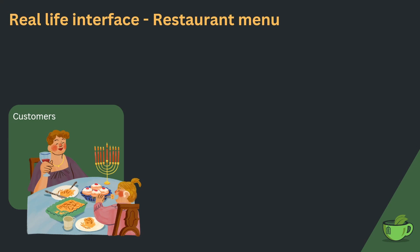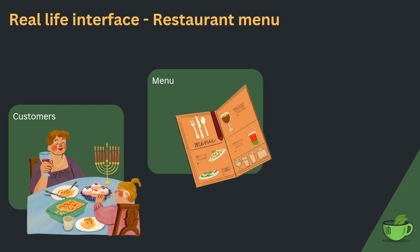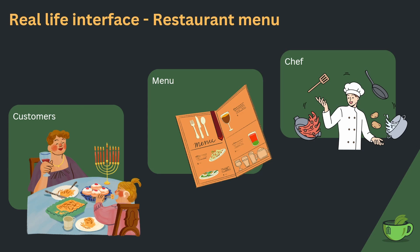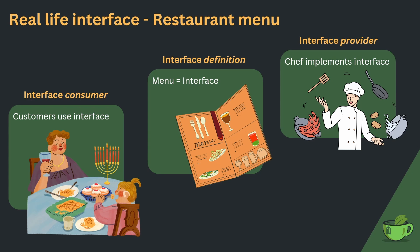Let us start out with a situation that everybody knows well. You're in a restaurant and you would like to order some food. What you are typically served first is, of course, the menu. On the menu, you can find all the items that you could order in this restaurant. And on the other side, you will typically find a chef who is able to cook all the items on the menu. This is a very good example of an interface, or a situation where an interface is used. The menu actually represents the interface. It is an interface between you as the customer, who uses the interface, and the chef on the other side, who implements the interface. Or you could also say that the menu is the interface definition, you as the customer are the consumer of an interface, and on the other side, the chef is the provider of the interface.